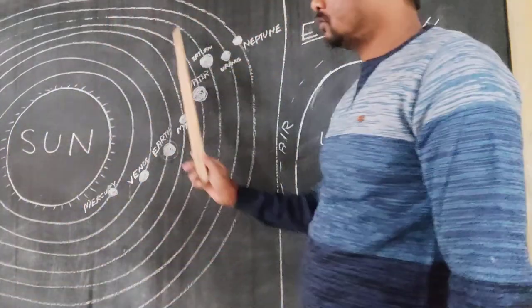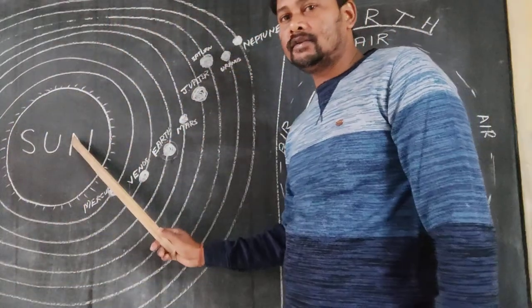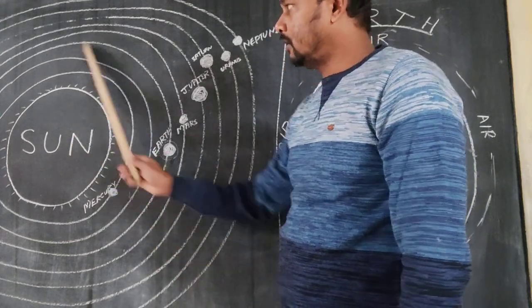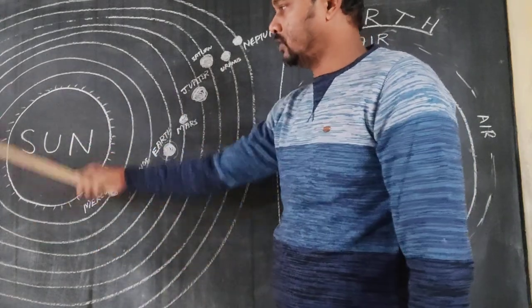So, this is the solar system. You see the sun is in the middle, and the eight planets, they are moving around the sun.